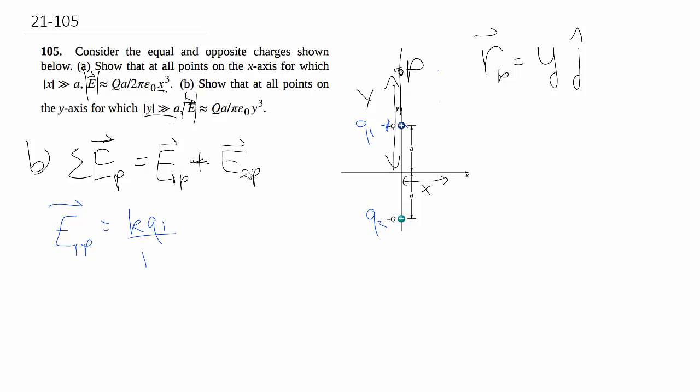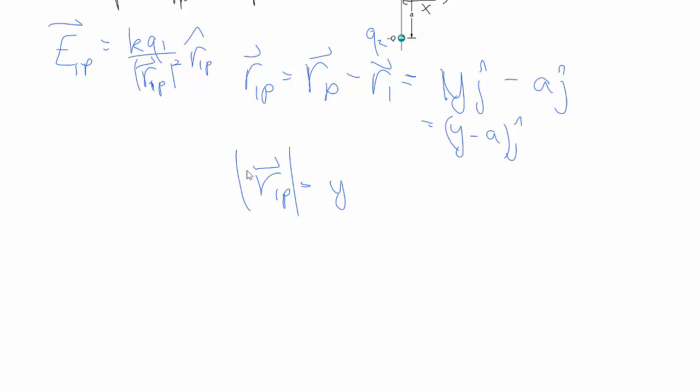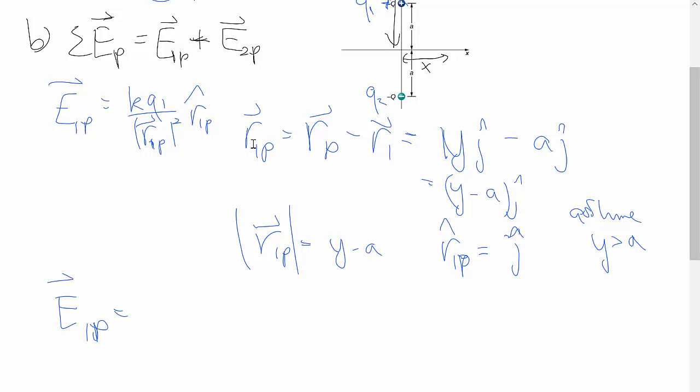KQ1 over R1P square hat R1P hat. And the R1P in this case is again final minus original, final being the point. So we have R1P minus R1. And in this case, both of them are in the J direction. So you have YJ minus AJ. So you have Y minus A, all bracket J. So R1P as a magnitude, that's just Y minus A. And the hat, the unit vector, being a 1D thing, we no longer have to do the division because we're dividing by the same thing. We just know it's in positive J direction. Provided that we're going to make an assumption here. Y is greater than 0 and also greater than A because of the condition that they gave us. And summing everything in, we'll get K positive Q over Y minus A all square in the positive J hat direction.